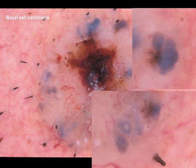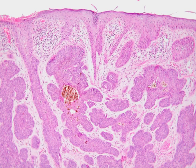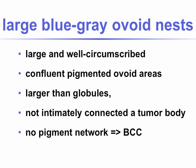Again at higher power, these leaf-like, blue-gray areas. Histopathologically, one can see these pigmented tumor nests, explaining very nicely this leaf-like pattern.